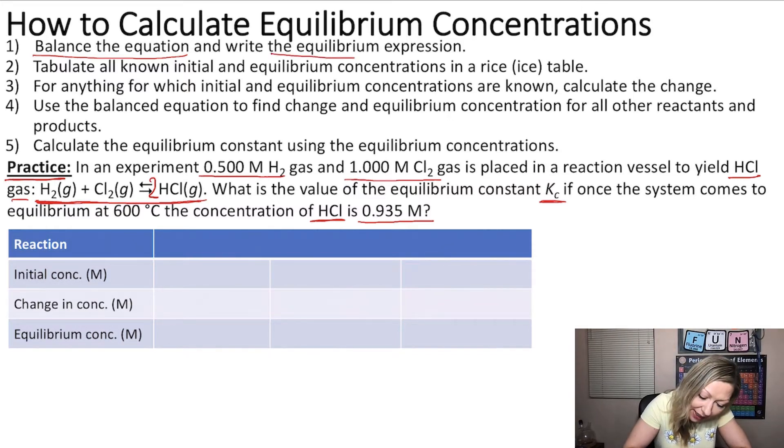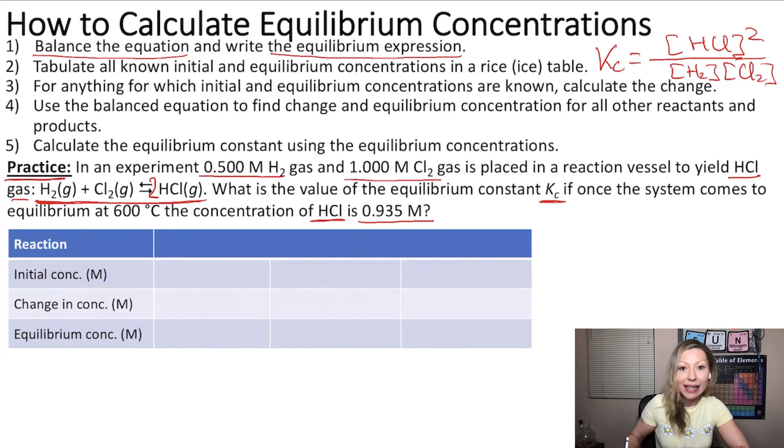Then we need to write the equilibrium expression. So Kc equals to the concentration of HCl, that's our product, squared, divided by the concentration of H2 gas and the concentration of Cl2 gas. And all these concentrations should be equilibrium concentrations. So we need to figure those out in order to calculate Kc.